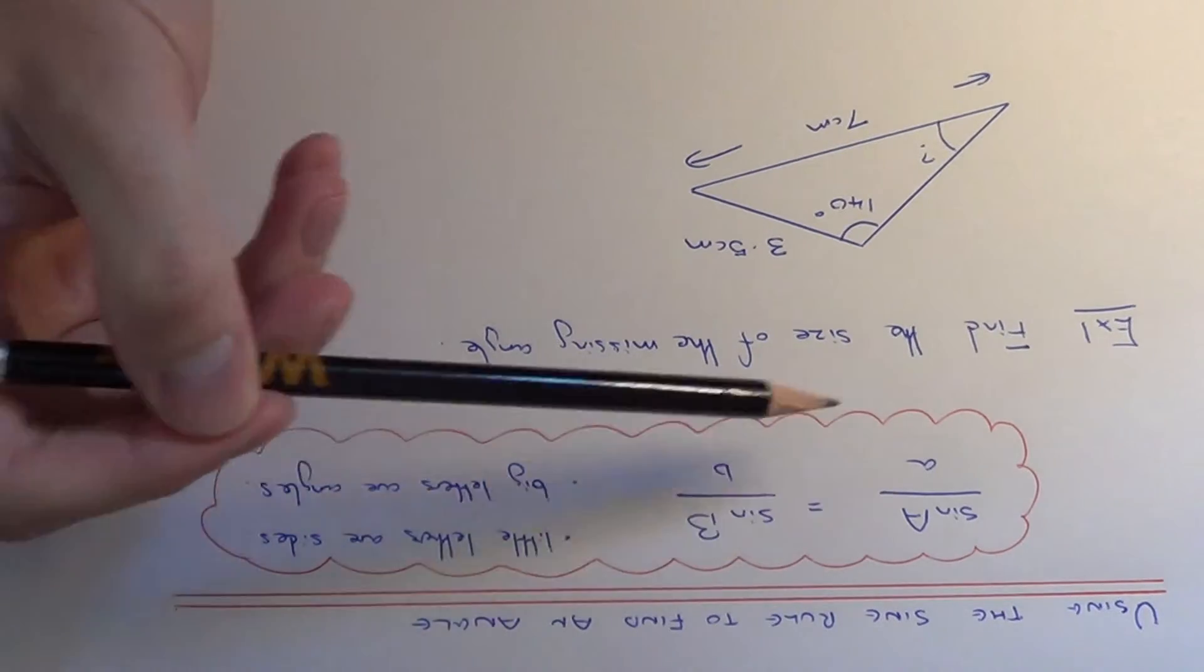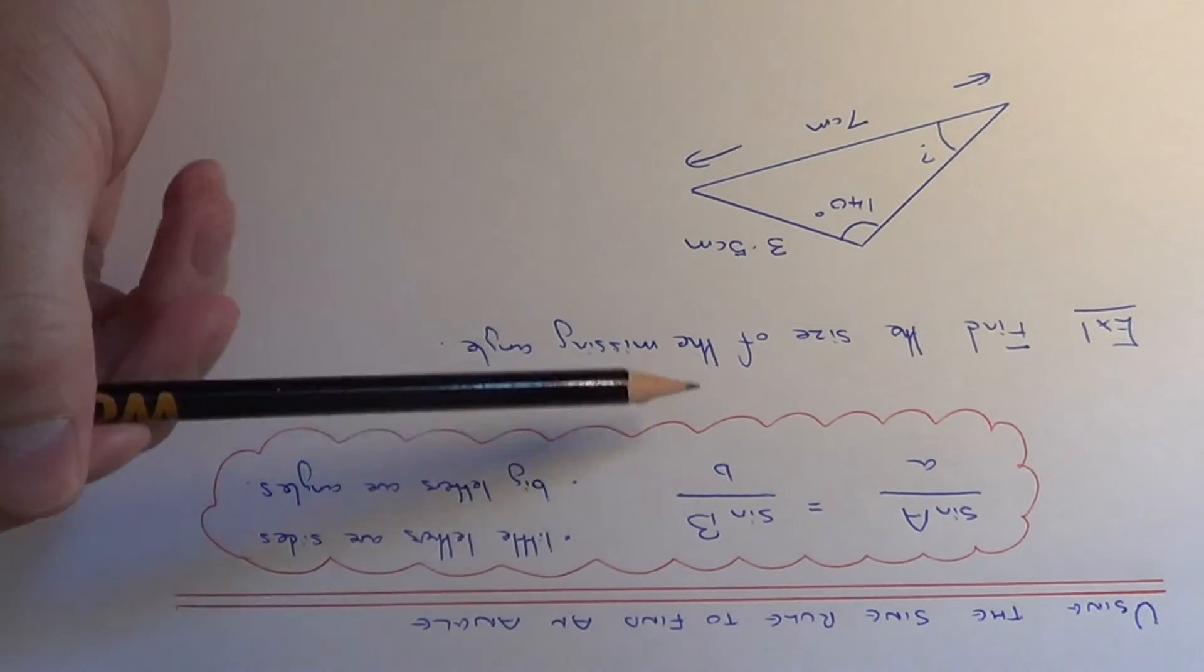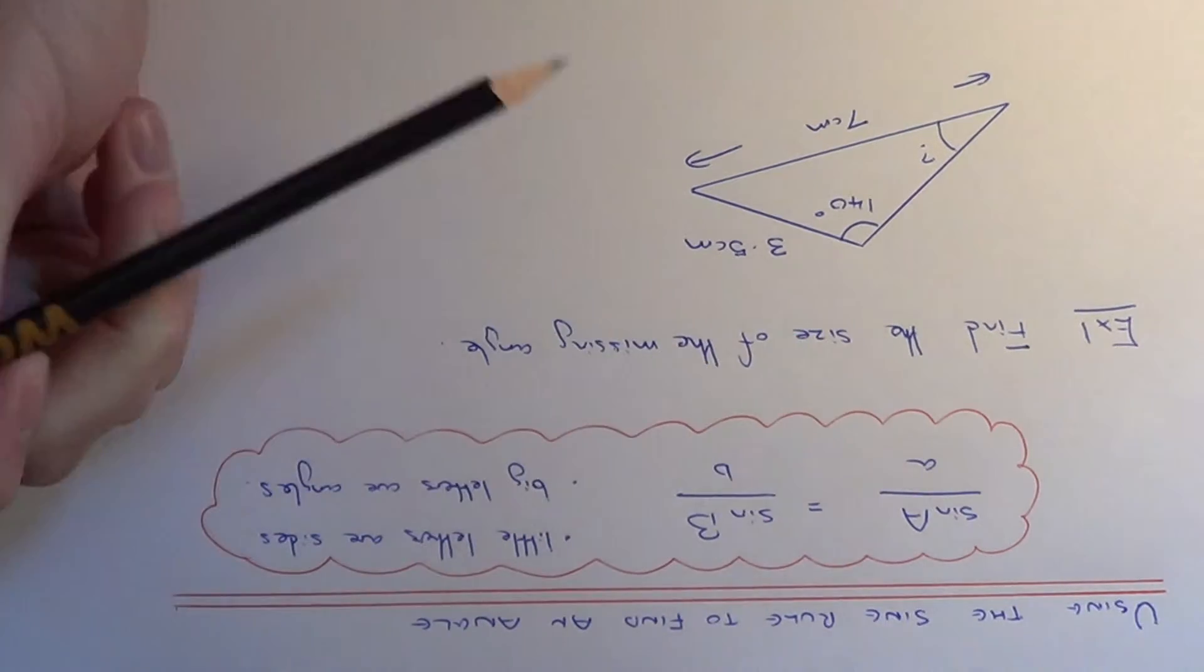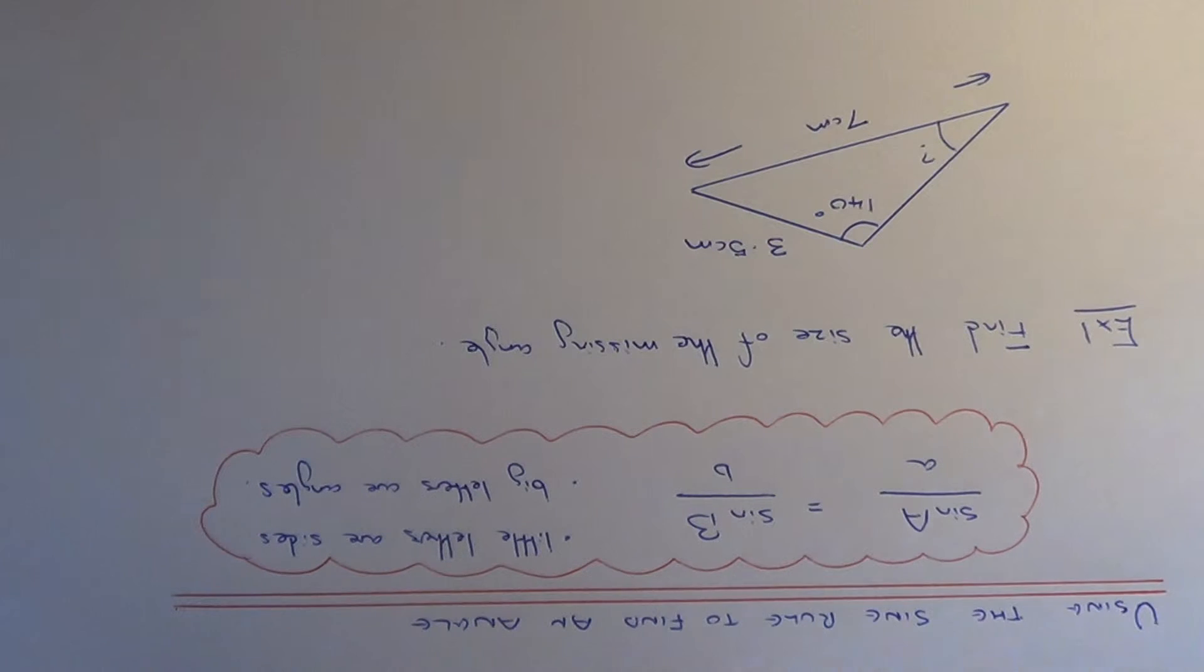Notice that the formula is upside down to the normal formula for the sine rule. The numerator and denominator are switched over. This just makes it easier to rearrange the formula later on.